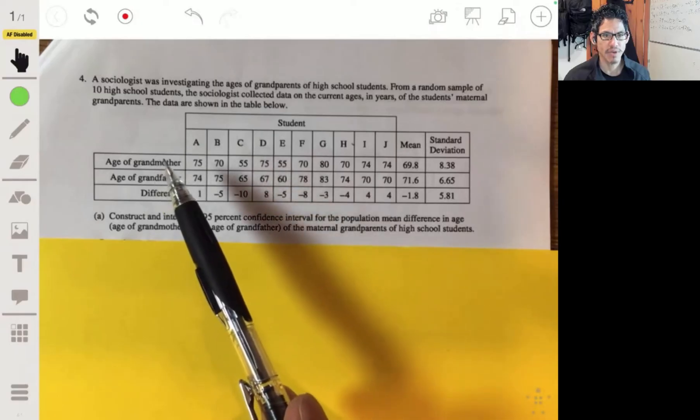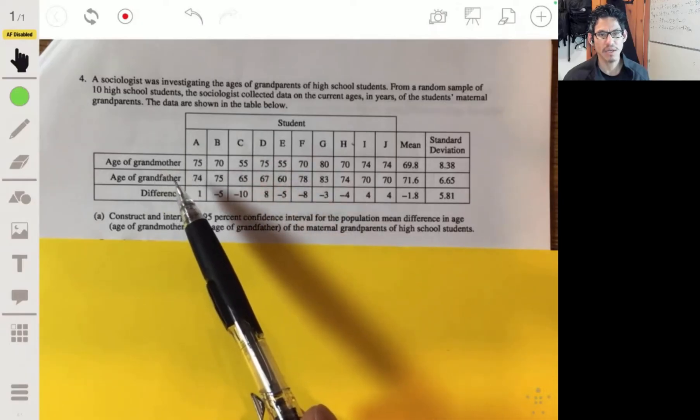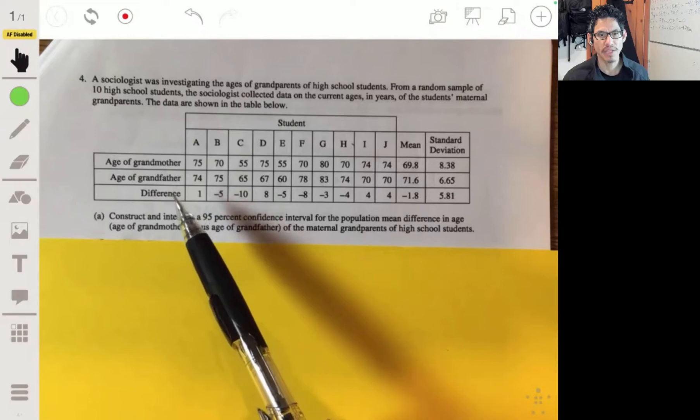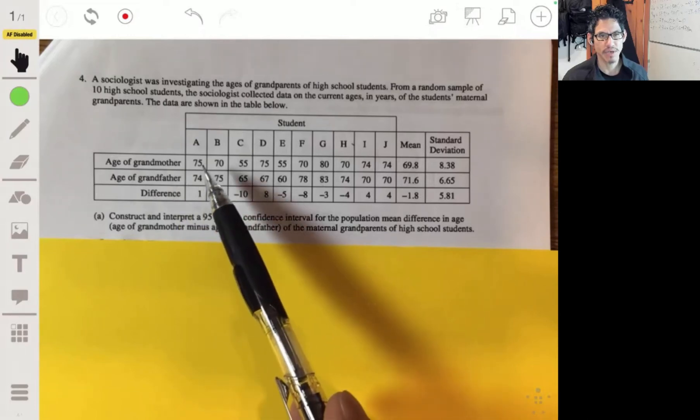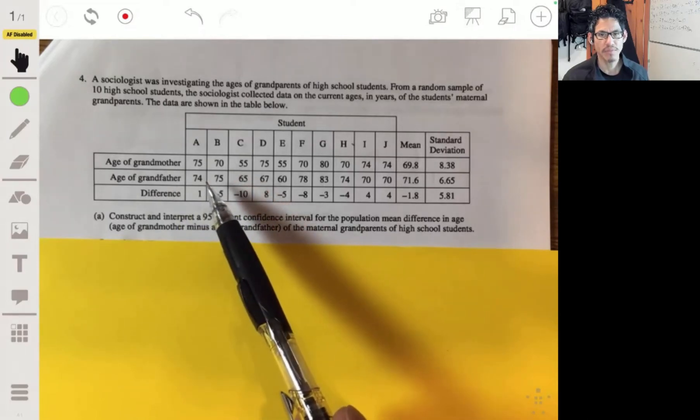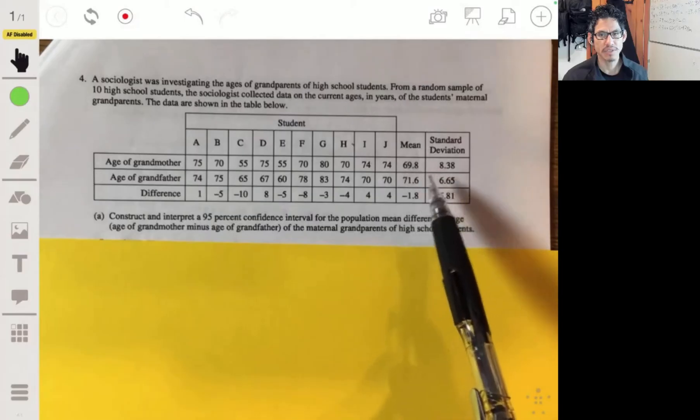So we have the age of the grandma, the age of the grandpa, and the differences. It looks like it's grandma minus grandfather. We got our means here and our standard deviations.